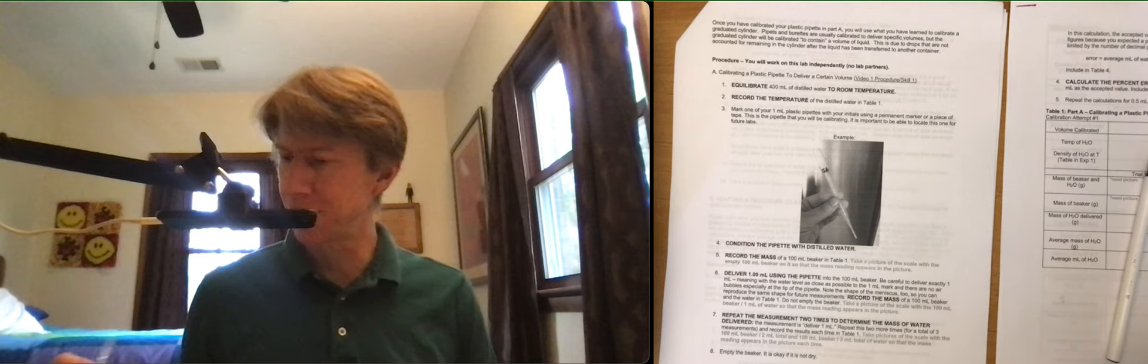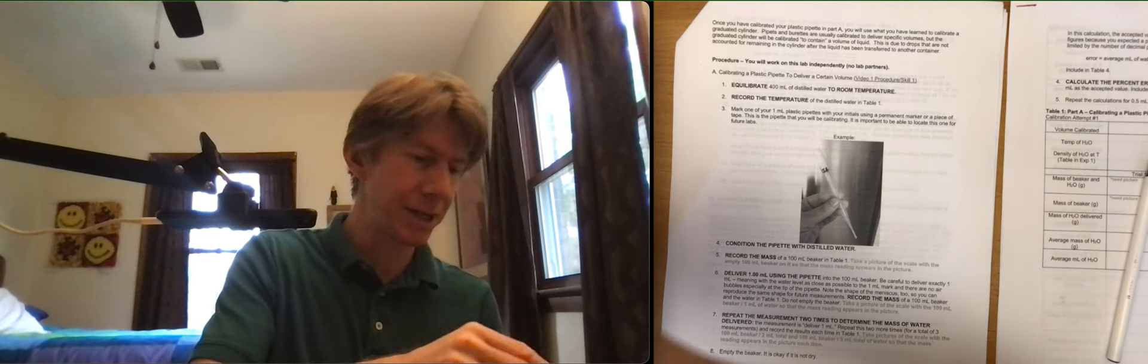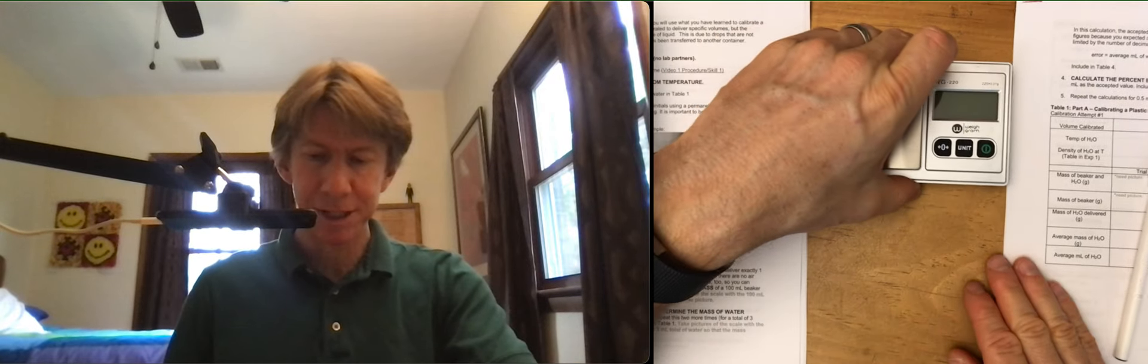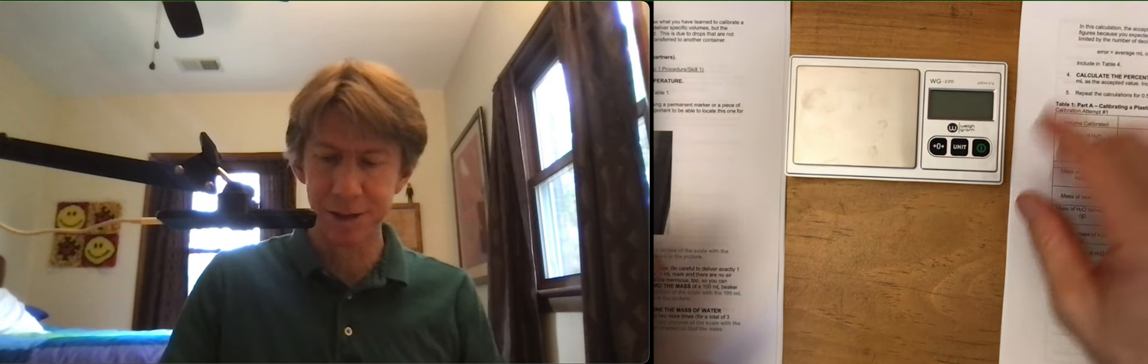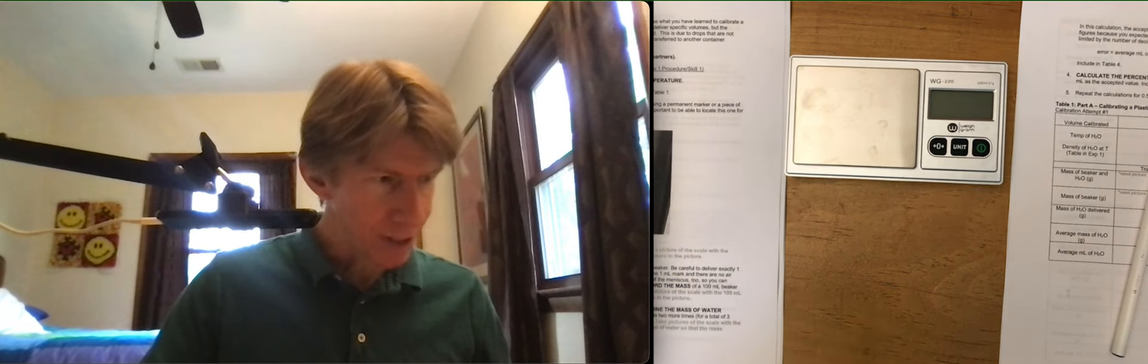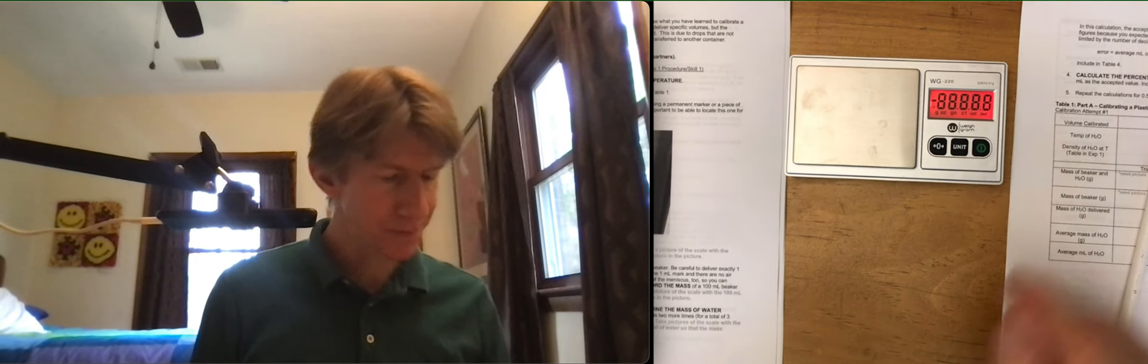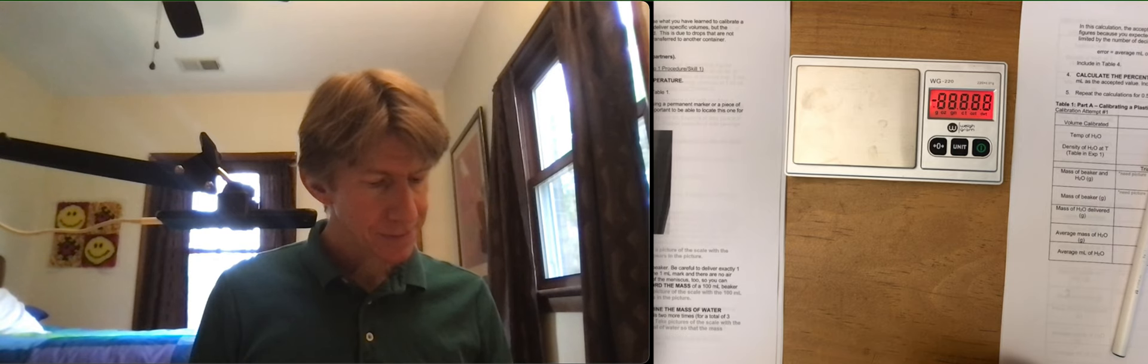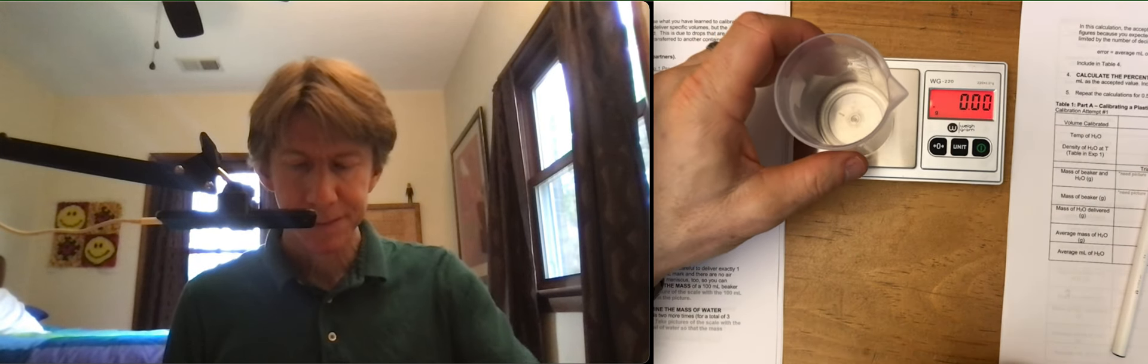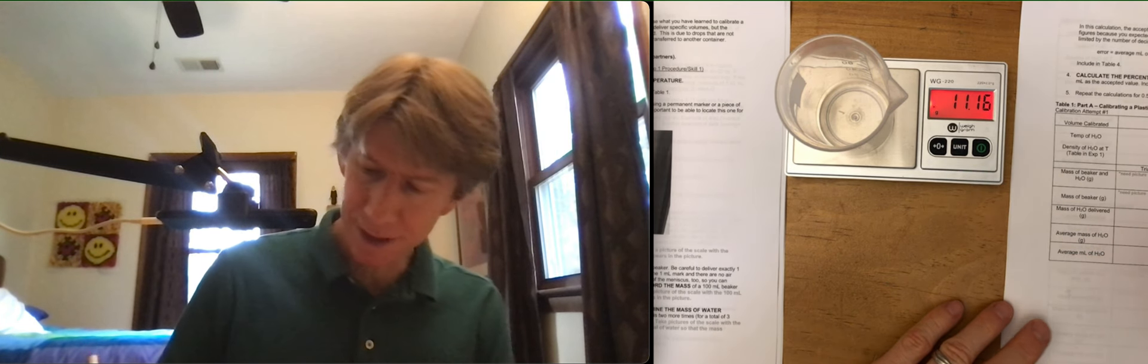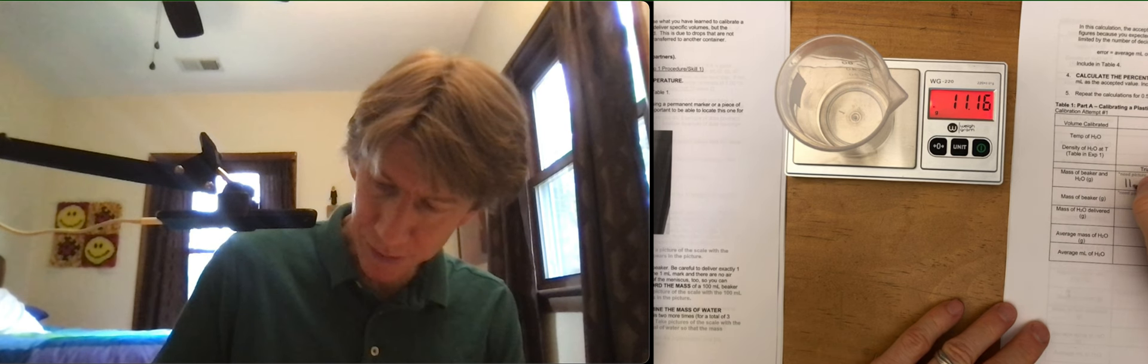Record the mass of a 100 milliliter beaker. I'm going to put my pipette in my water. Get my scale positioned here. Nice flat surface. I am weighing a 100 milliliter beaker, just double-checking that it's clean and dry. Once it's on there, you're going to take a picture of this, because that's one of the things that needs to be submitted. 11.16.